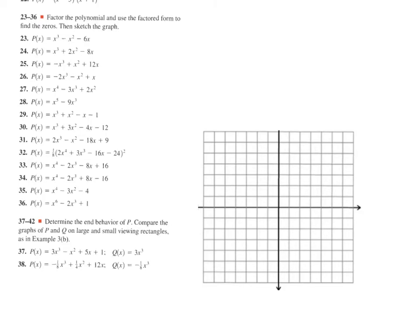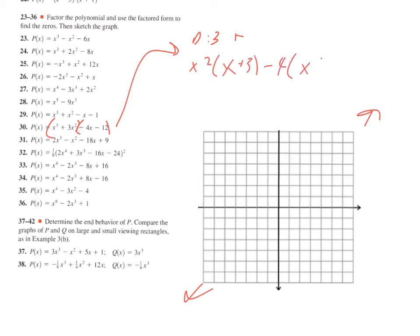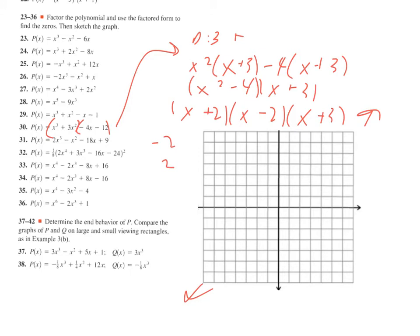Next up, number 30. The biggest exponent is three, so this is a degree three positive — end behavior is down to the left and up to the right. It has four terms, so I'm going to do grouping. The first group I take out x squared, leaving x plus three. The next group I take out negative four, leaving x plus three. So I get x squared minus four times x plus three, then break apart that difference of perfect squares. That gives zeros at negative two, two, and negative three — all cuts since they're all first power, switching top to bottom to top to bottom.